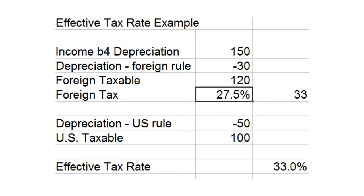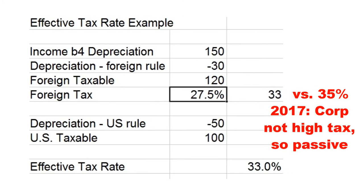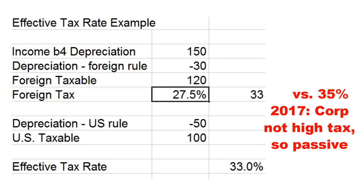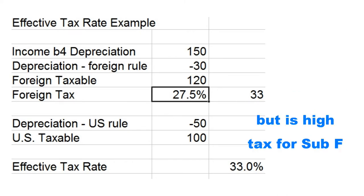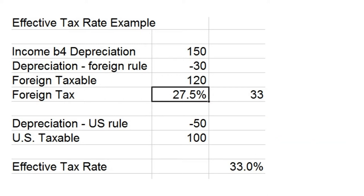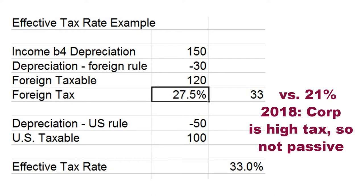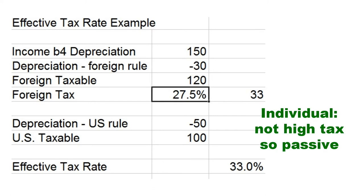If I'm a corporation, then in 2017, the high-tax exception does not apply for regular tax, and the income stays passive. But it is high tax for the Subpart F rules discussed in another video. For 2018, however, this 33% far exceeds the corporate tax rate, so for 2018, the item is subject to high foreign tax and is not considered passive. Different years, different results. If I'm an individual, even if my marginal tax rate is 15%, the income stays passive for both years. That's because the 33% effective foreign tax rate is less than the maximum individual tax rate of 39.6% or 37%.